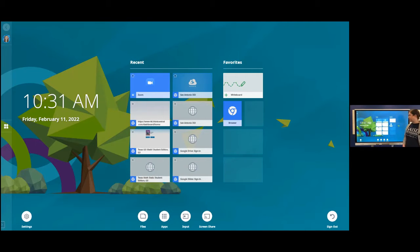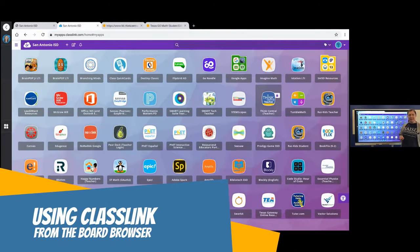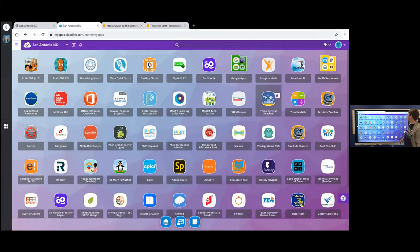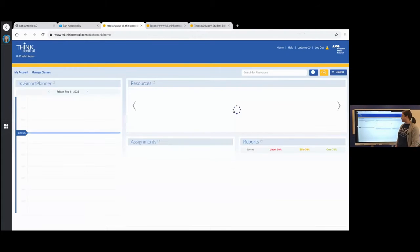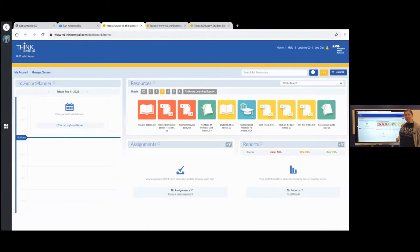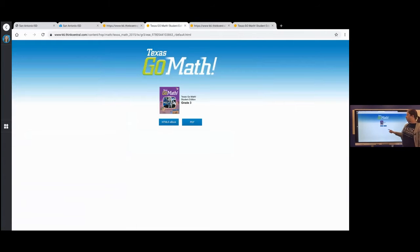I'm going to start in the browser, and I'm going to be in my ClassLink. From my ClassLink, I'm going to open Think Central. In Think Central, you can choose your grade. Today, I'm going to demonstrate using third grade. I want to open the Student Edition eBook, and then choose PDF.